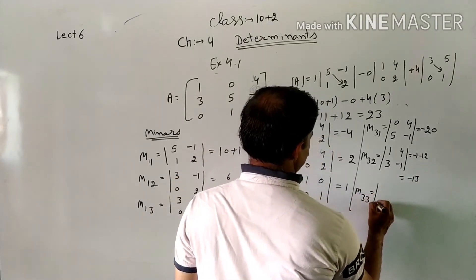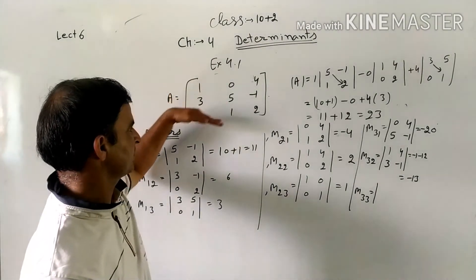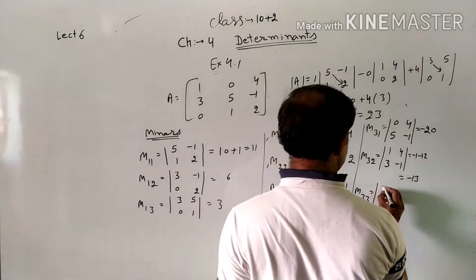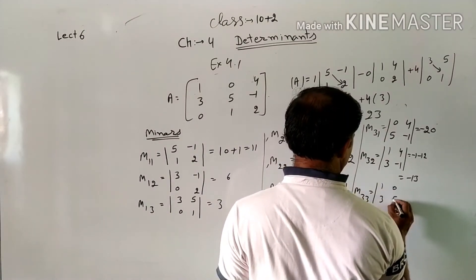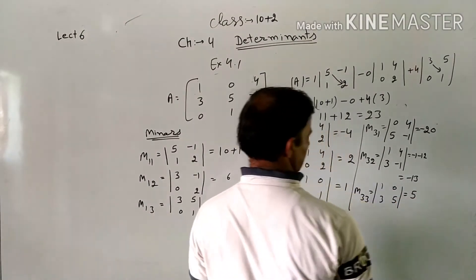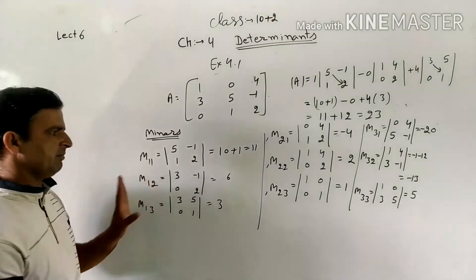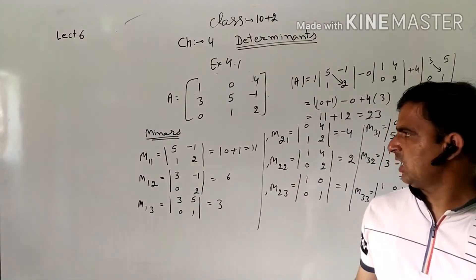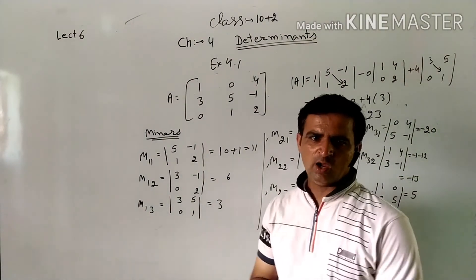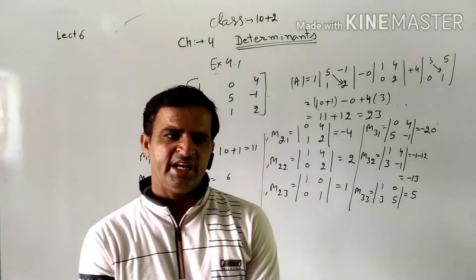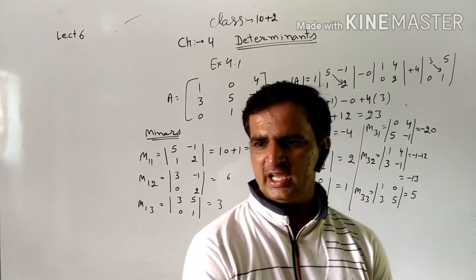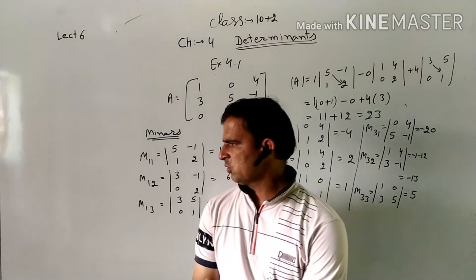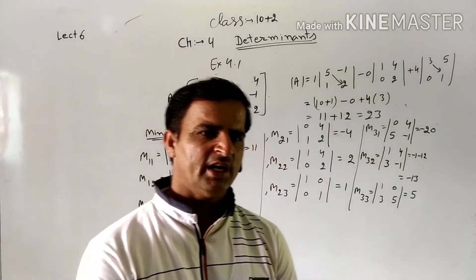M33: deleting 3rd row and 3rd column leaves [1, 0; 3, 5]. Multiplying gives 5. So we have found all the minors. To find the minor of any element, delete its row and column, then compute the determinant of the remaining elements.